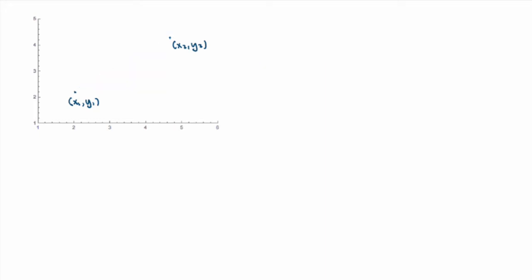But that was too easy. Now suppose that I still have my two points, but instead of a straight line, I have a curve that joins them. If I ask what is the length of the curve, that is a little more complicated. You can't just use the Pythagorean theorem here, because it's not a line anymore. So how can you calculate the length of this curve? This is what we're going to study in this video.